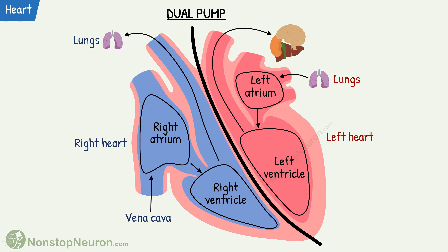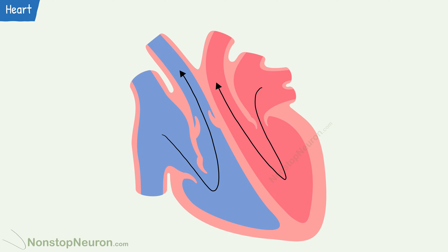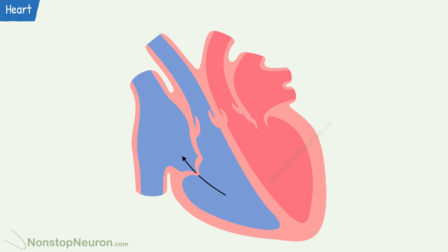Now let's talk about valves. Flow of blood through the heart is unidirectional, that is, it flows in one specific direction. The unidirectional flow is achieved with the help of flap valves. When the blood tends to flow back at any level, the respective valve closes and prevents the backflow. So the blood flows only in one direction.